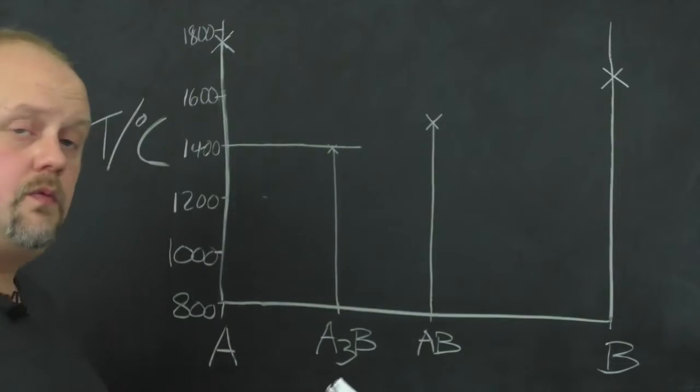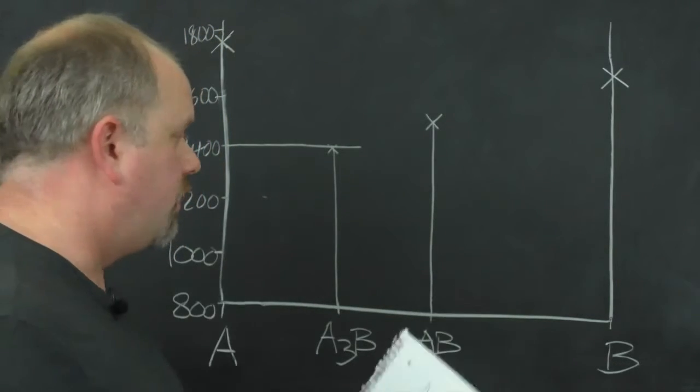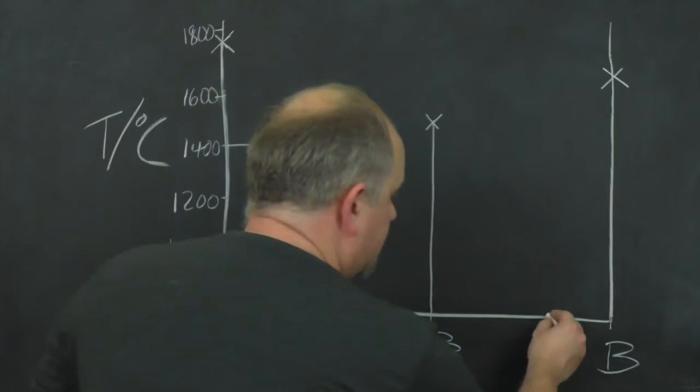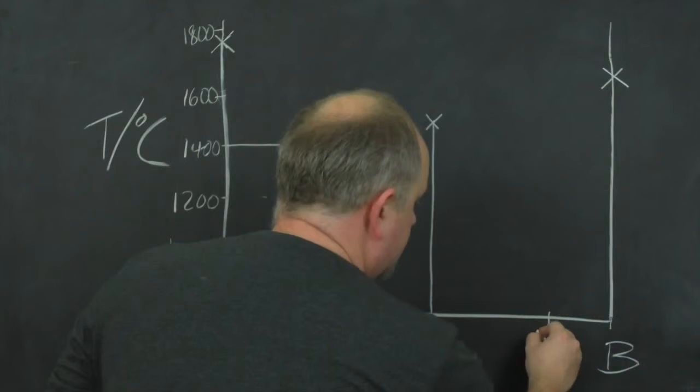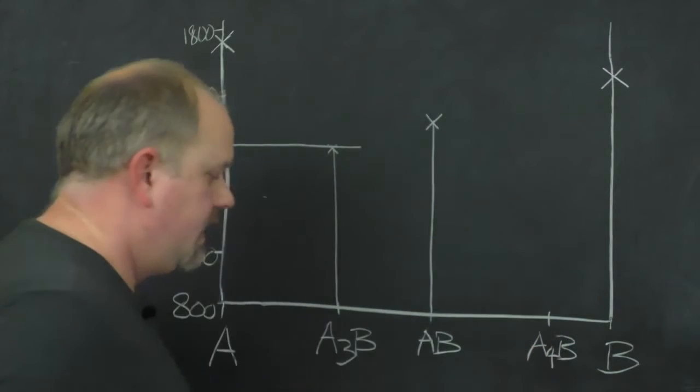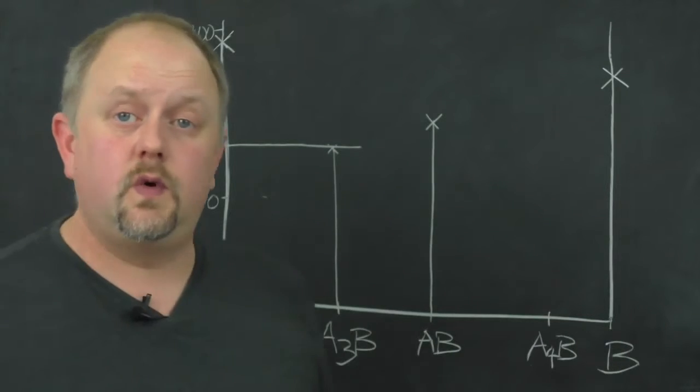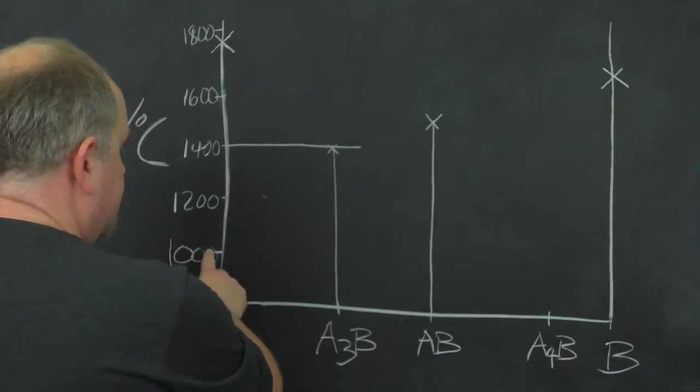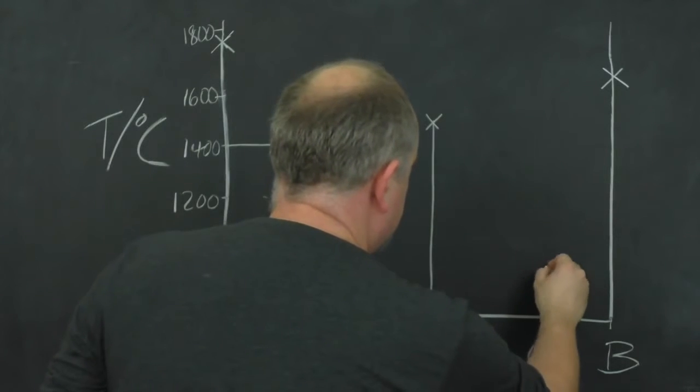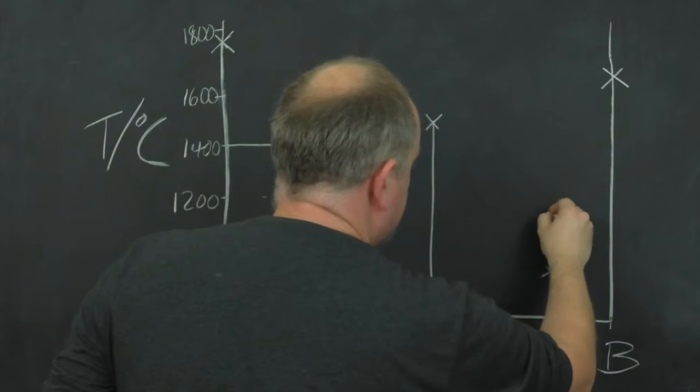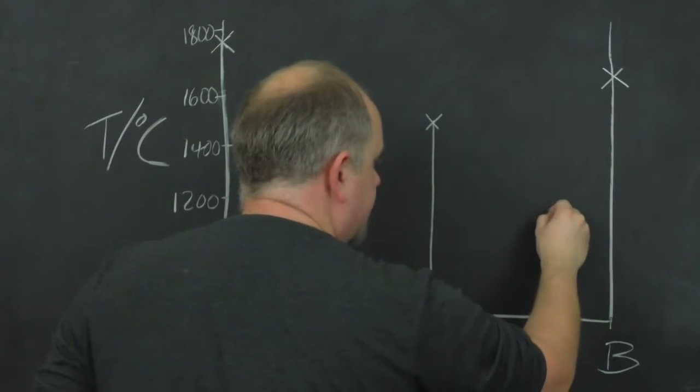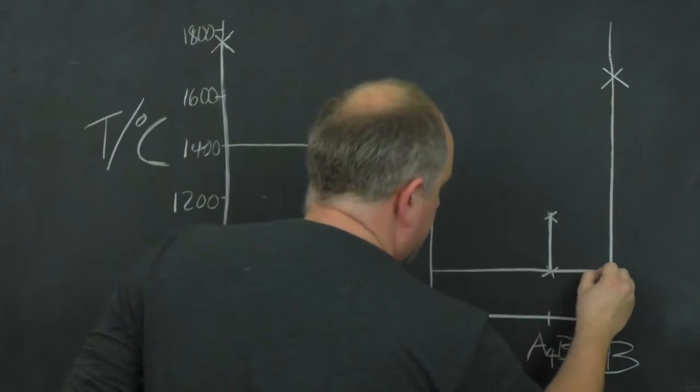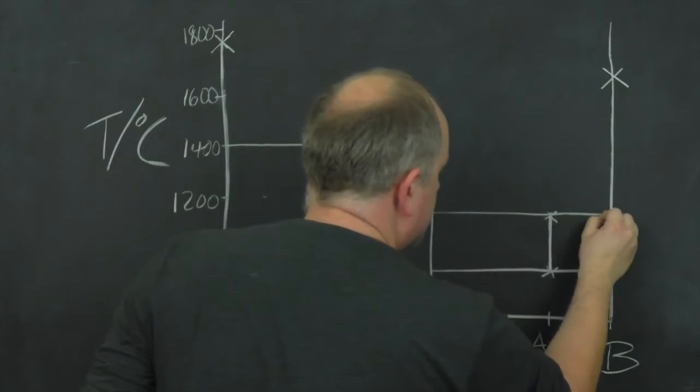Next we've got one final intermediate phase, which is AB4, which is 80% B. So we can put that somewhere over here, AB4. And we're told that that is only stable between 1000 and 1200 degrees C. This often catches a lot of people out when I do this sort of question. So 1000 is there, 1200 is there. So the line stability for this line phase only extends over that region. And that means that we can also draw on lines top and bottom.